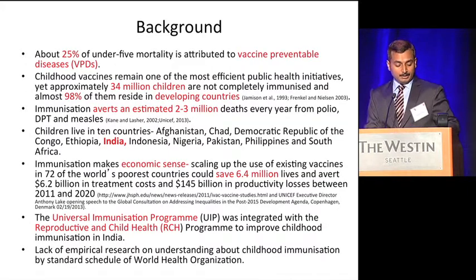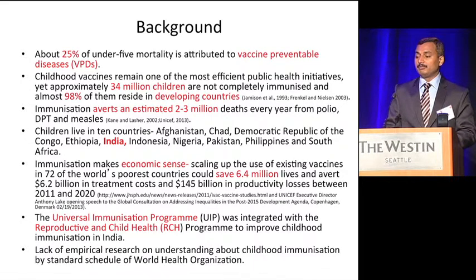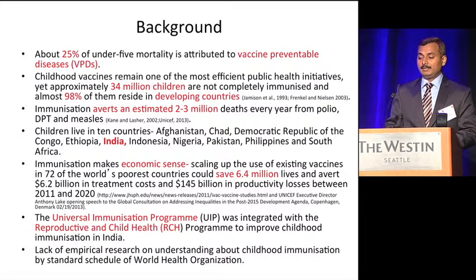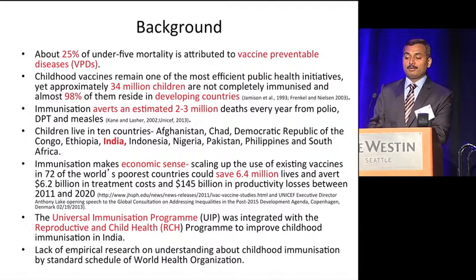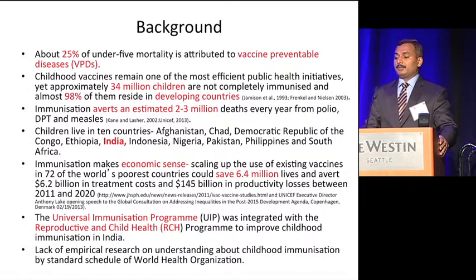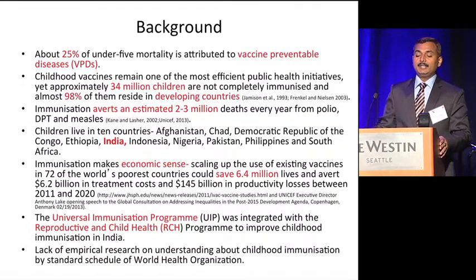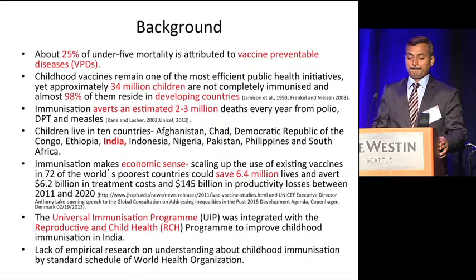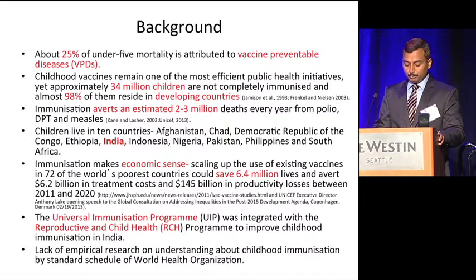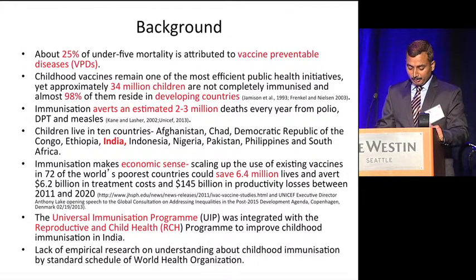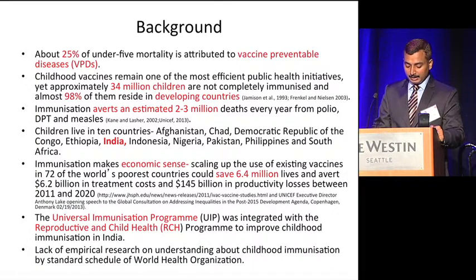Nearly 25% of under-five mortality is attributed to vaccine-preventable disease around the world. Childhood vaccines remain one of the most efficient public health initiatives, yet approximately 34 million children are not completely immunized, and almost 98% of them reside in developing countries. Childhood immunization prevents an estimated 2 to 3 million deaths every year from polio, DPT, and measles. India is among the 10 countries where most unimmunized children live.